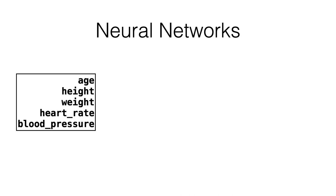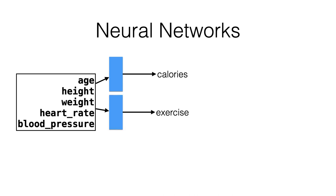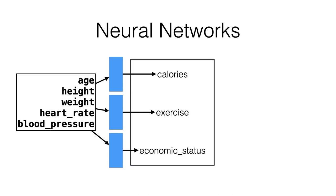What makes more complicated neural networks interesting is that they take this idea and stack it, building multiple linear models that collect together. For example, you might have one linear model that outputs a calorie estimate, another that takes in the same information and outputs how much exercise a person should get, and yet another that outputs an estimate of someone's economic status.